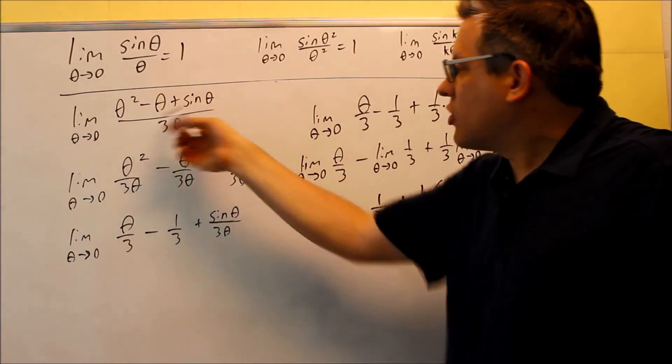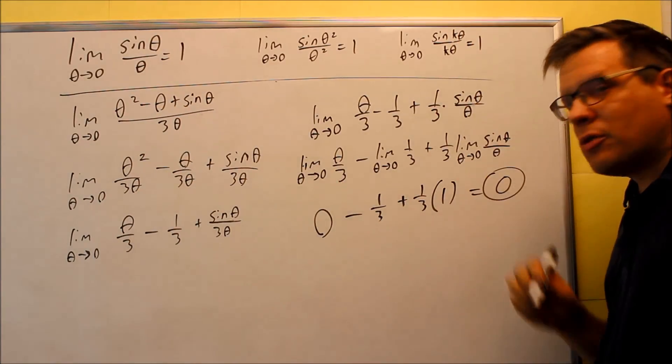As theta goes to zero of this particular function, all of it's going to end up going to zero. That would be the y value.